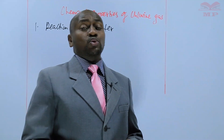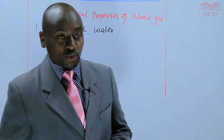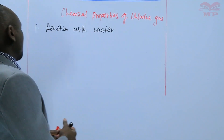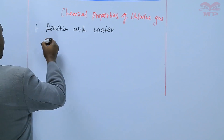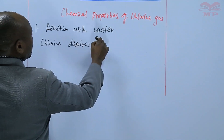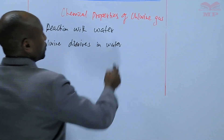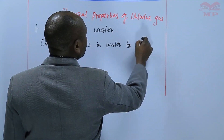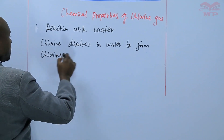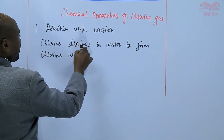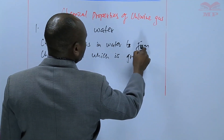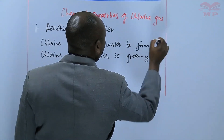Hypochlorous acid is also known as chloroquine acid. That is why we say that chlorine is an acidic gas. Chlorine dissolves in water to form chlorine water, which is green-yellow in color — chlorine water just takes the color of chlorine.